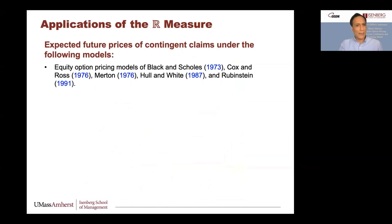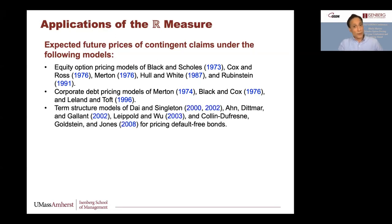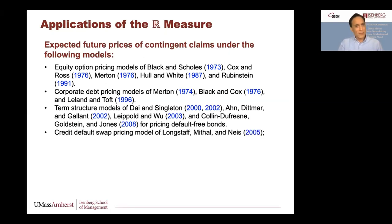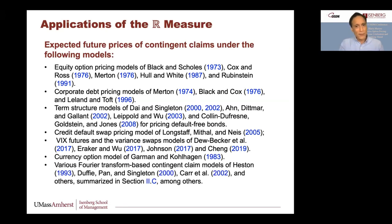To summarize applications of R: it applies to all constant interest rate-based models, whether stochastic volatility, forward start options, Cox-Ross alternative processes, corporate debt pricing models of Merton, Black-Cox, Leland-Toft, endogenous bankruptcy models, term structure models of Duffie-Singleton, Andersen-Piterbarg, quadratic affine models, credit default swap pricing models of Longstaff-Mithal-Neves, and VIX futures and variance swap models. Across all these models from different areas, you can get the expected future price of a contingent claim and compute the expected return.